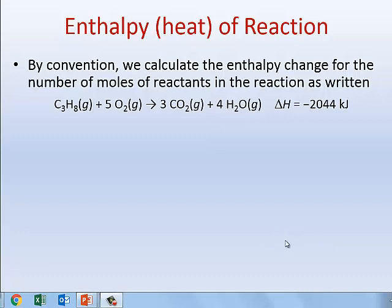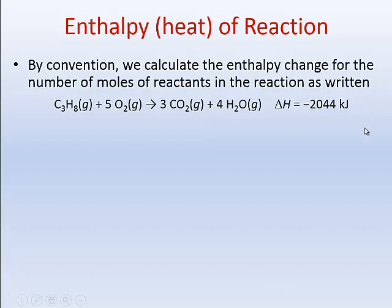Hi everyone, welcome back. When last we talked, we were talking about enthalpy, or changes of enthalpy in a chemical reaction — that's just another way for chemists of saying the heat absorbed or released in a chemical reaction. If we look at this particular chemical reaction, when one mole of propane burns in oxygen, it reacts with five moles of oxygen to create three moles of carbon dioxide and four moles of water. The ΔH of that reaction is negative 2044 kilojoules — the negative sign means that heat was released to the surroundings.